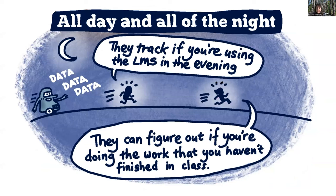Whether any of this tracking is true or not is really beside the point. The main message is that students carry with them this feeling of being trapped, which cultivates a sense of distrust between them and their teacher and has the power to change how they feel about school and learning. This tracking does not end when kids leave the school — several students thought the school could see their personal internet searches even when at home, and some believed this tracking could continue into future university or job applications.